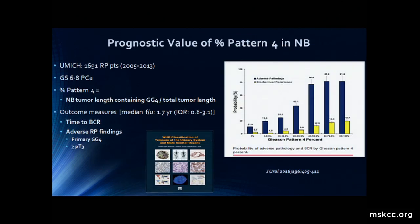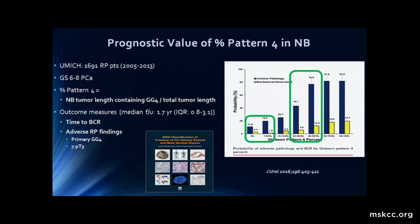There's some data emerging to back this up. This is a study from the University of Michigan led by Rohit Mehra, about 1,700 patients, showing that as you increase the percent pattern 4 in a biopsy, you have more prediction of adverse RP findings — previously defined as primary pattern 4 and over-pT3. There seems to be between 20 and 40% pattern 4 already a significant increase in so-called adverse pathology. And even at the low end, where there's just 3+3 disease, there seem to be a percentage of patients, a little over 10%, who will also have 4+3 disease or non-organ-confined disease at prostatectomy.